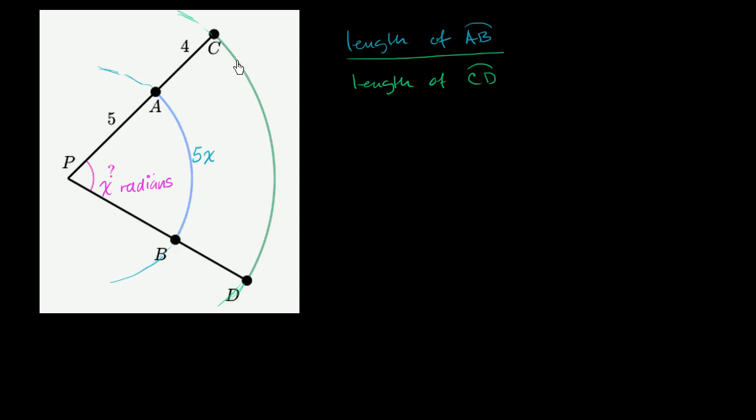Well, same argument for this arc length right over here. It has a radius of nine, five plus four. And so this is going to be x radii long. Each radius is nine units. So it's going to be 9x units long.